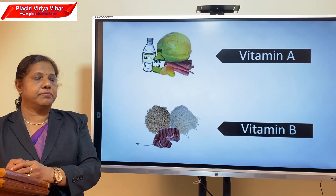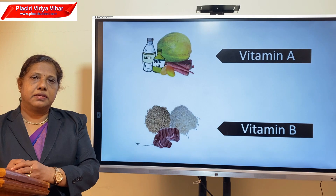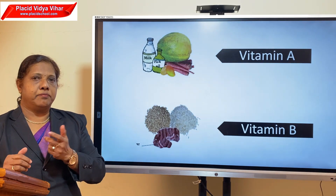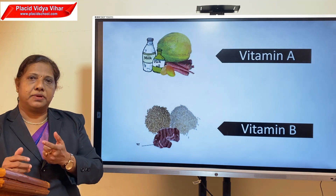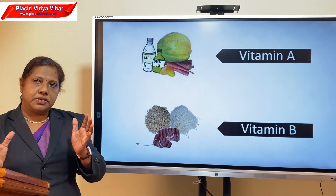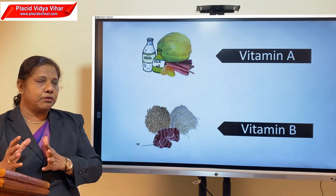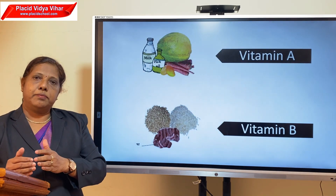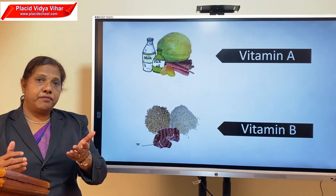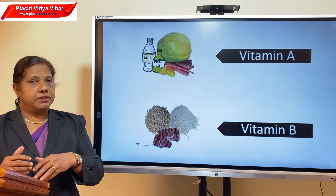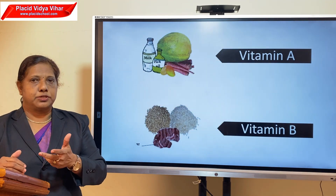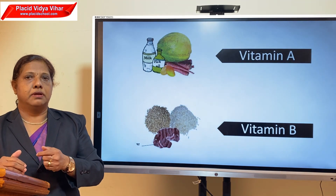Next is vitamin B. Vitamin B is actually a group of vitamins — vitamins like B1, B12, B6, B3, etc. — so it is also called vitamin B complex. Vitamin B complex is very important for our body. It prevents infection and boosts our energy levels, muscle tone, and brain function.